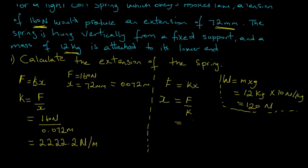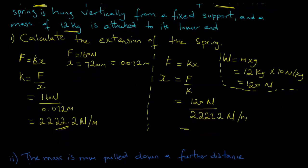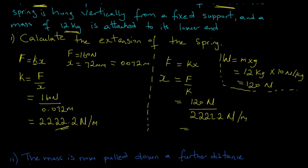This weight of 120 newtons is our force. So we have x = 120 newtons divided by the spring constant of 2222.2 newtons per meter, which works out to be 0.054 meters.